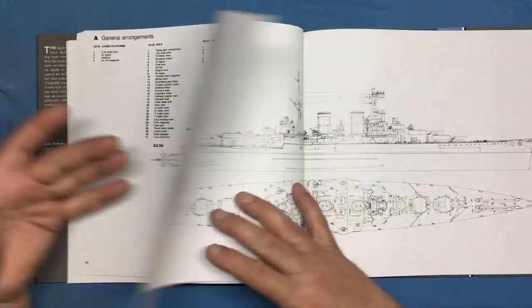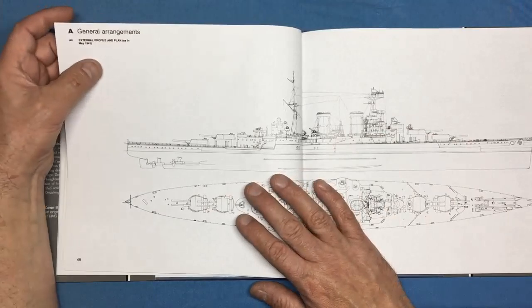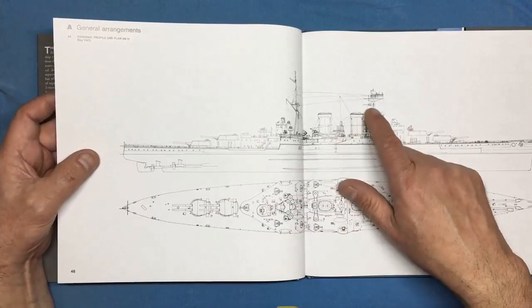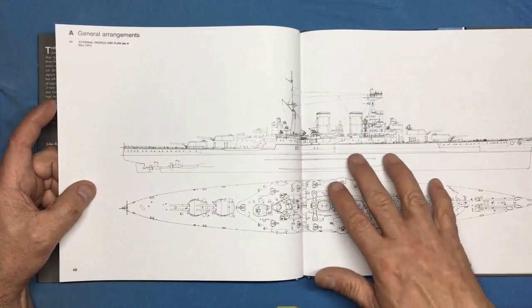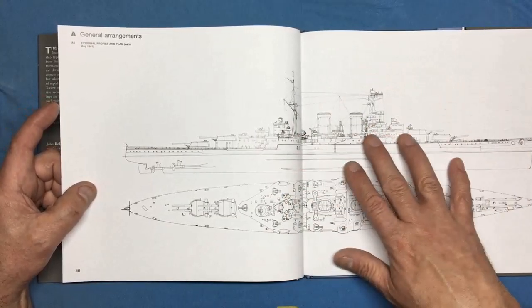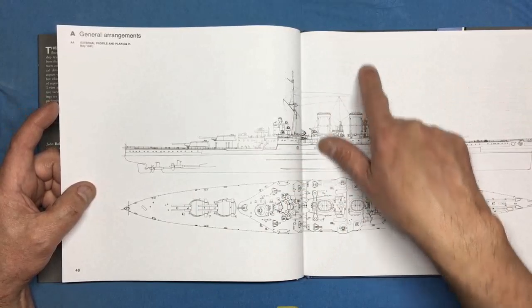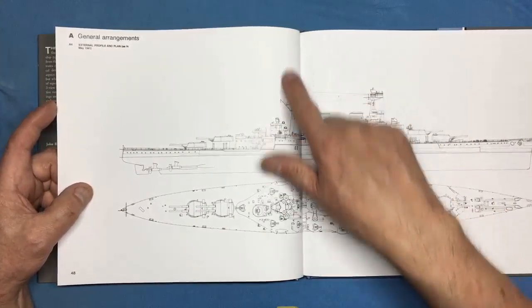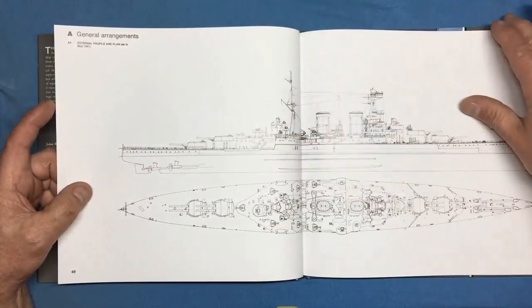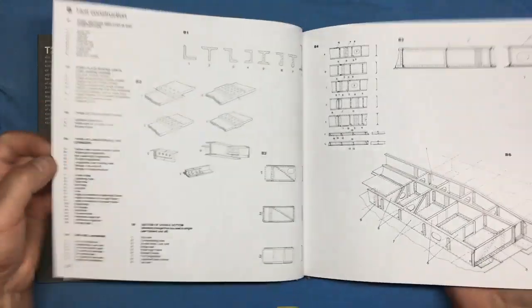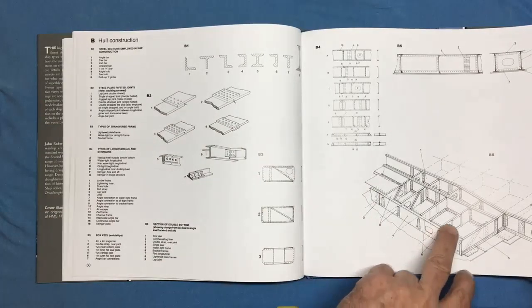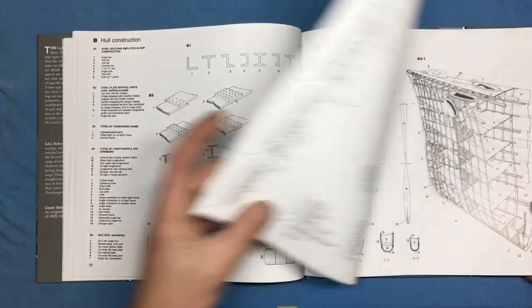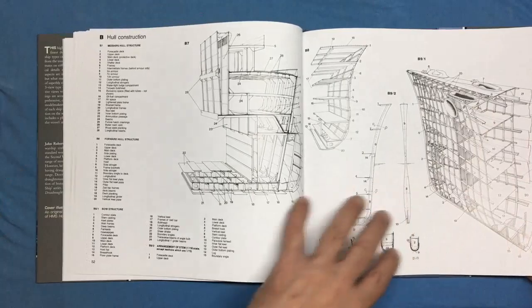This is an external profile as she was in 41, so when I build a model of this, this is how I will build it, as she was sunk, as people term it. You can see the mast is gone from the fore mast there. I'm going to start flicking through.